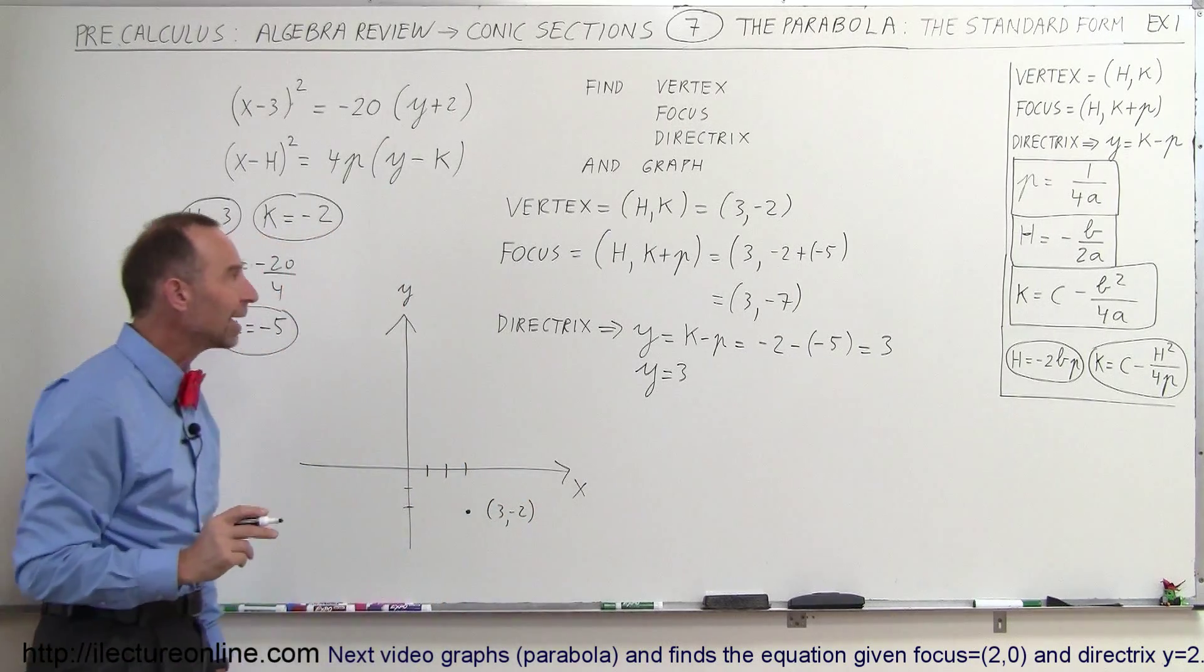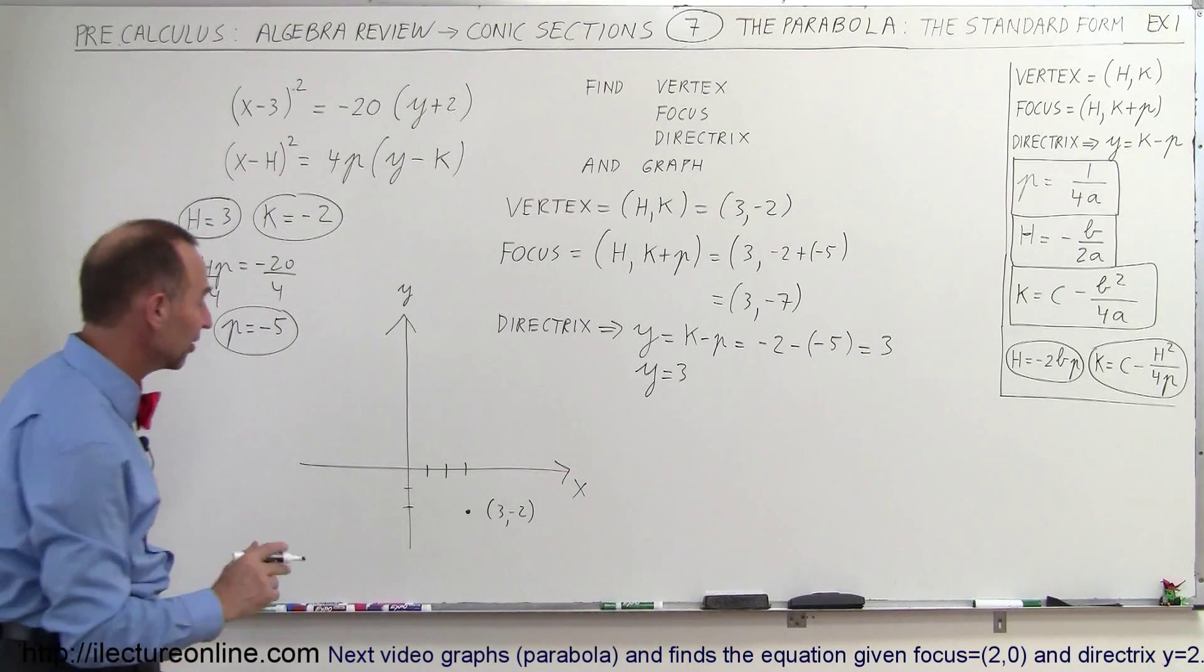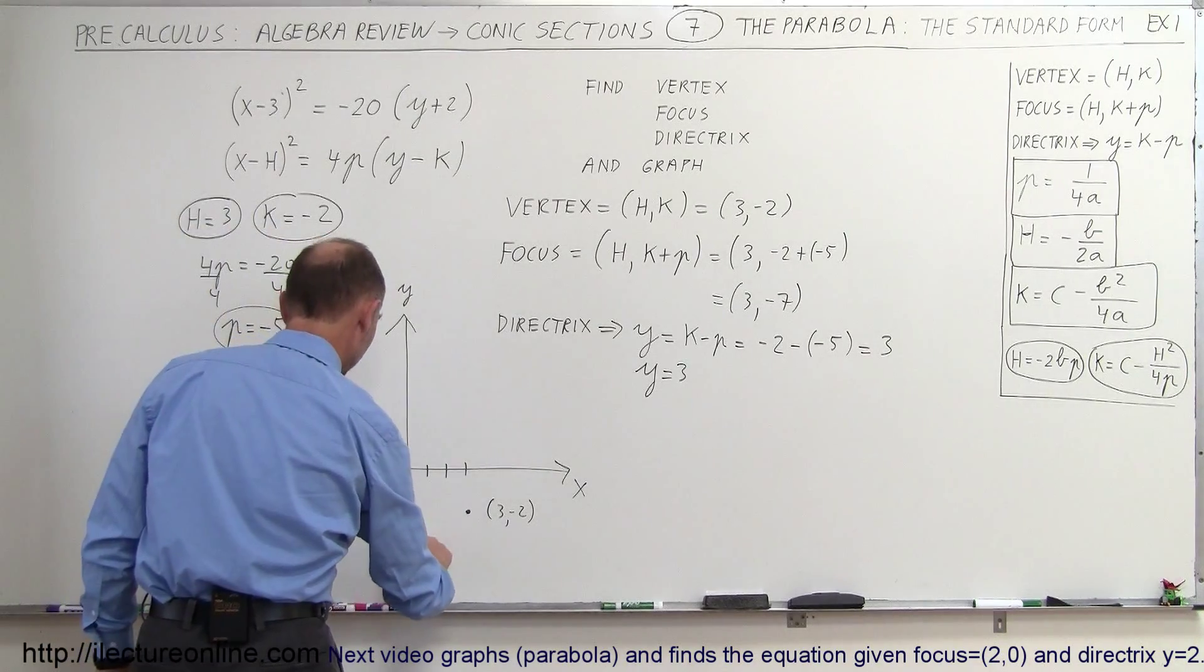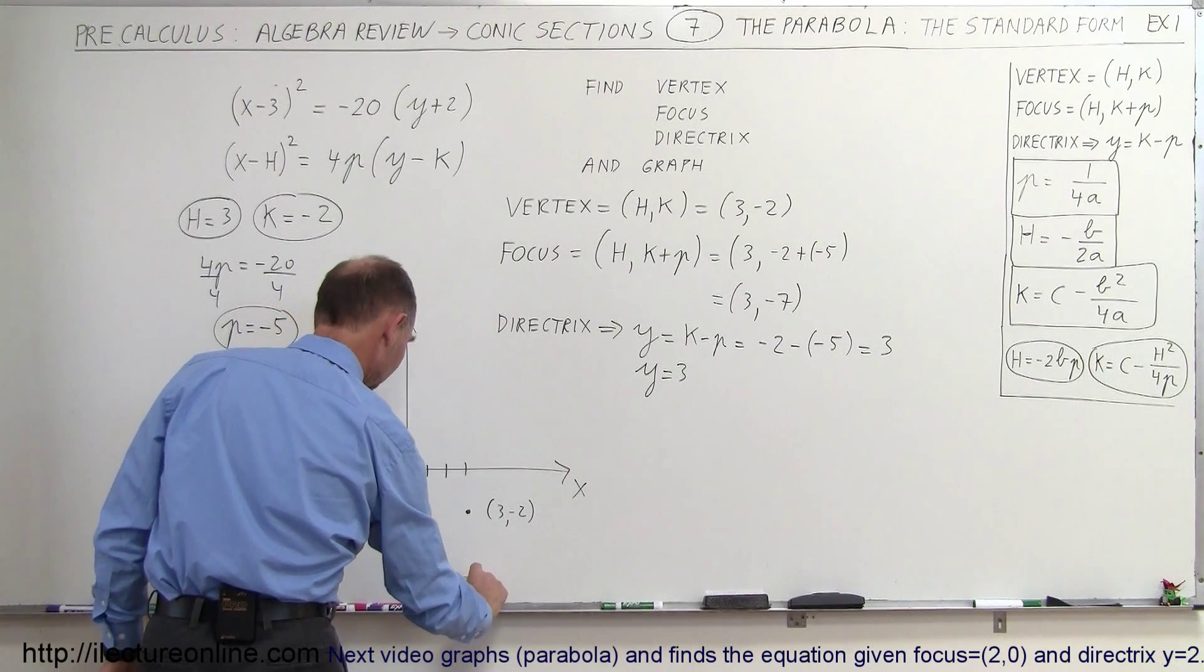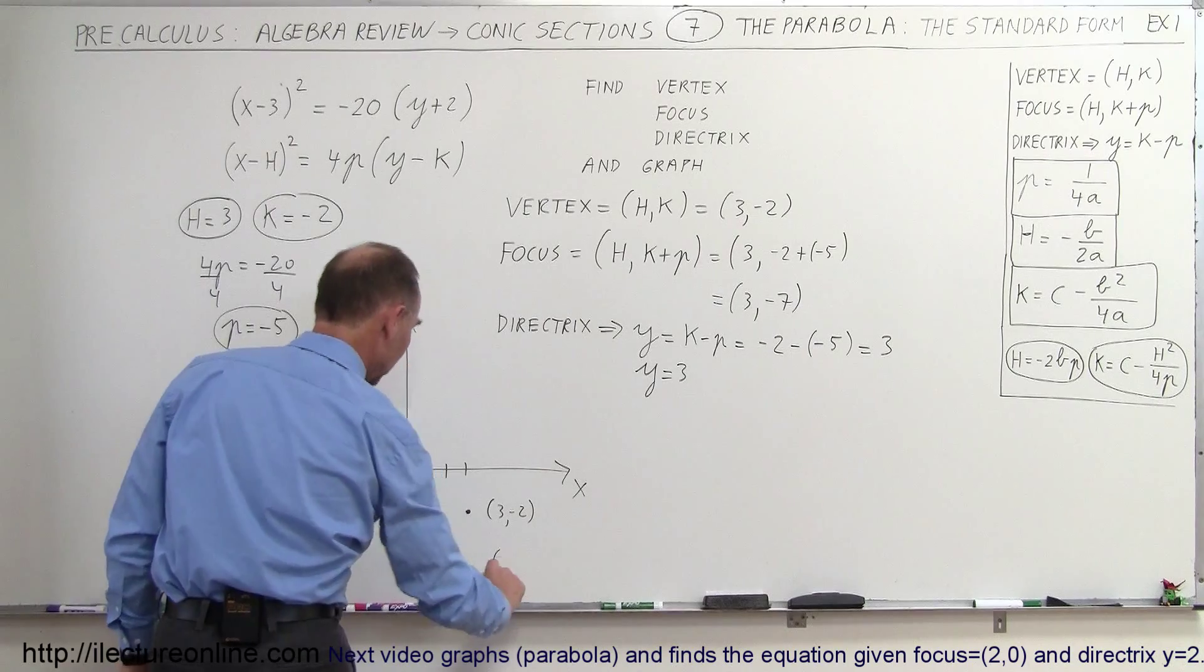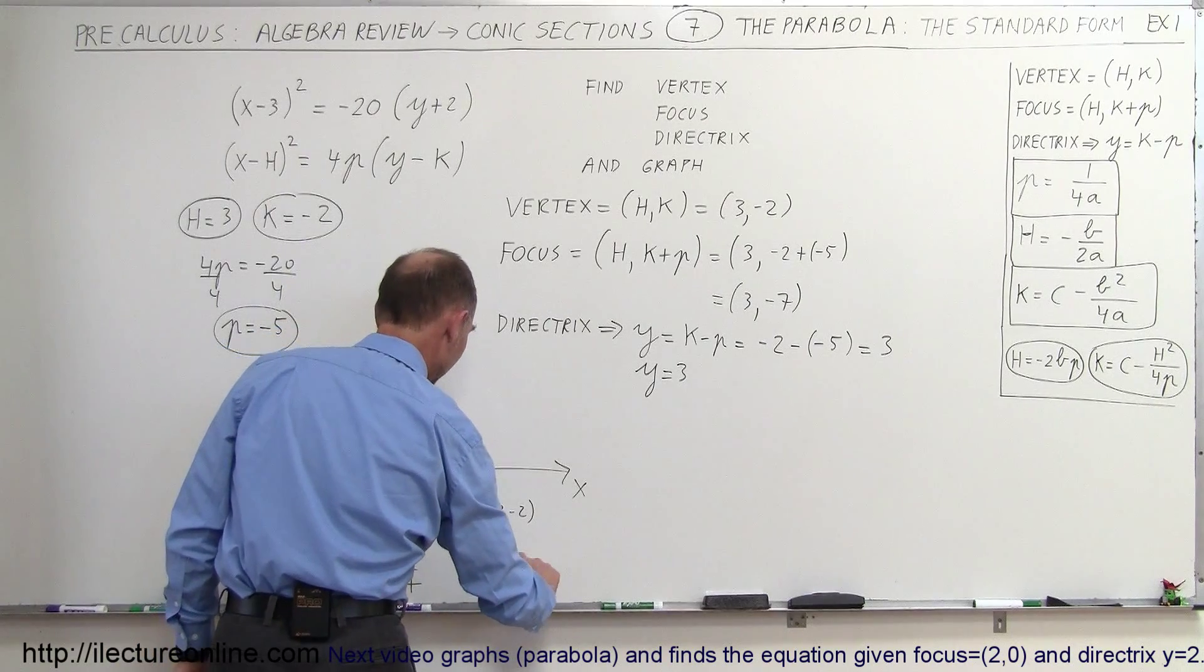Now we want to find the focus. The focus is at 3 and minus 7. So that's minus 3, minus 4, minus 5, minus 6, minus 7, way down here. So there, that's the focus. So that would be equal to 3, negative 7.